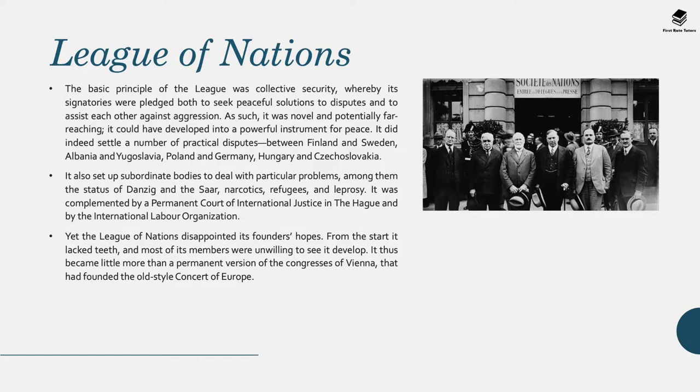The League of Nations also set up subordinate bodies dealing with particular problems, among them the status of Danzig and the Saar. It also tackled issues of narcotics, refugees, and leprosy, which really ravaged most of Europe. It was complemented by a permanent court of international justice in The Hague and by the International Labour Organisation. However, the League disappointed its founders' hopes. From the start it lacked teeth, and very importantly, even though it was the brainchild of President Woodrow Wilson, the USA ultimately declined to join the League of Nations.